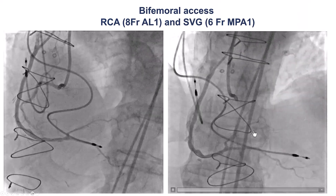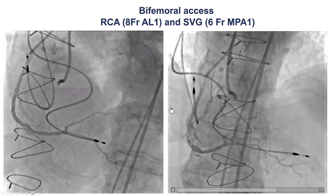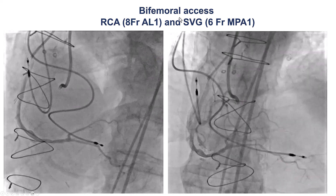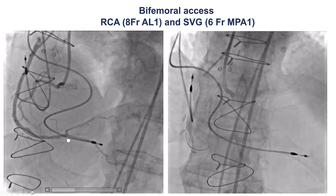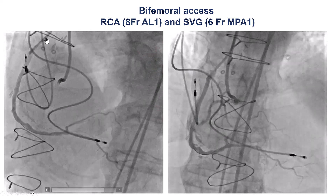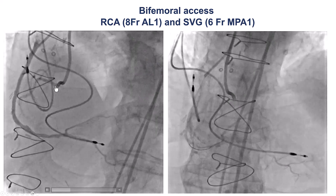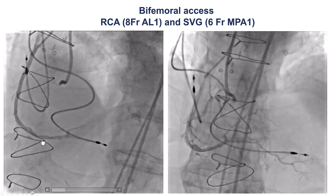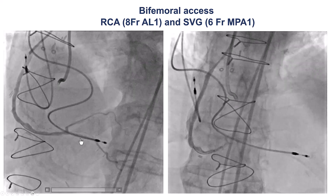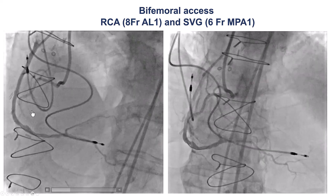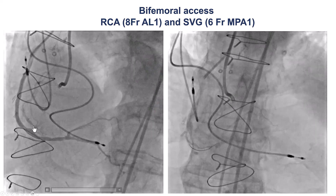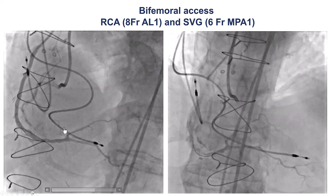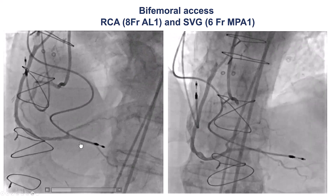A few weeks later, the patient presented for recanalizing the native right coronary artery. For cases like this, we often use bilateral femoral access for superior support, because previous bypass patients can be very challenging to recanalize. We used an AL-1 guide to engage the right coronary artery and a multipurpose guide to engage the saphenous vein graft to the PDA. There was no significant restenosis in the vein graft. The native RCA is occluded distally, with a bifurcation of the PDA and the right posterior lateral at the distal cap, with the PDA filling through the saphenous vein graft.